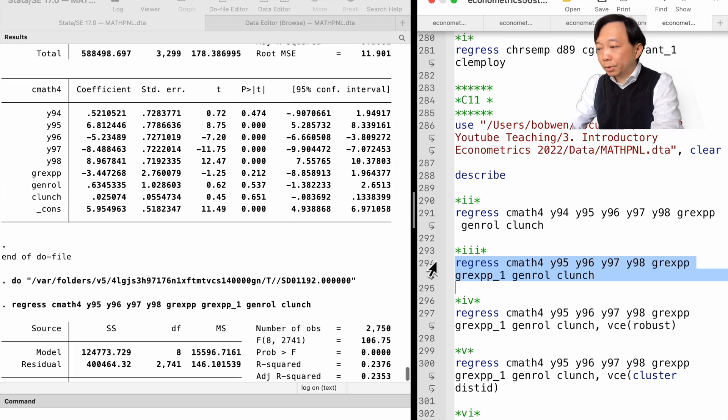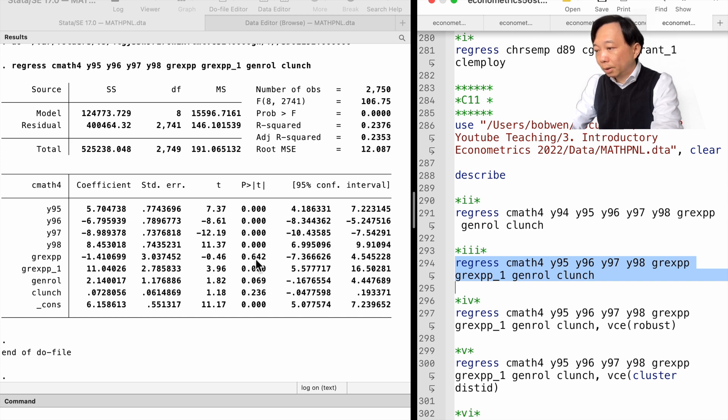Here is the estimation result in Stata. The current spending variable is still with the wrong sign and insignificant. The coefficient on the lagged spending variable is 11.04, which is statistically significant at the 1% level with a t-statistic of 3.96. It suggests that next year's math passing rate will increase by 1.1 percentage points if the spending this year increases by 10%. After controlling for the student population, poverty, the district fixed effects and the year fixed effects. It makes sense because the spending helps students prepare for the test.